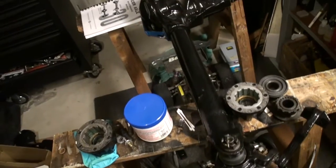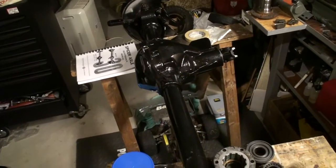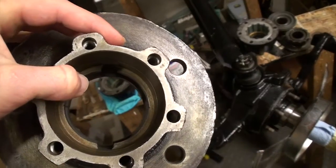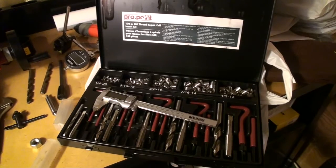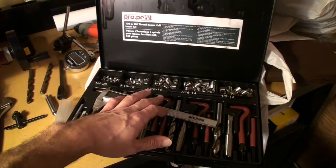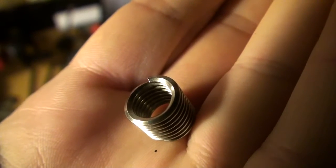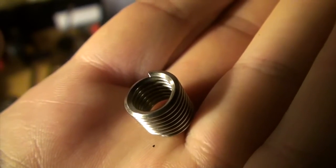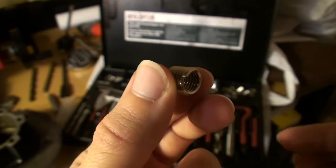I'm wrapping up my rebuild on my Dana 30 front axle for my Jeep, but I have a stripped thread in my hub. I went ahead and purchased a thread repair kit with the 3/8-16 size I need. The inserts are a stainless steel diamond-shaped coil. The insert threads into the part you're repairing, and then the inner diameter matches the bolt thread.